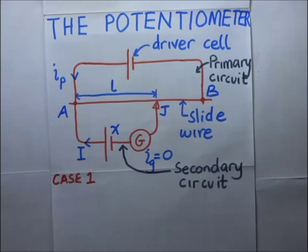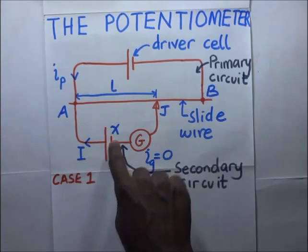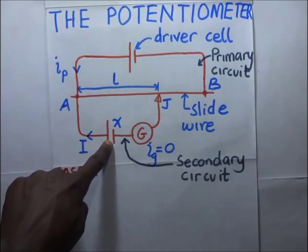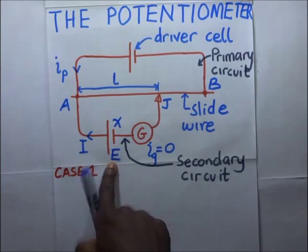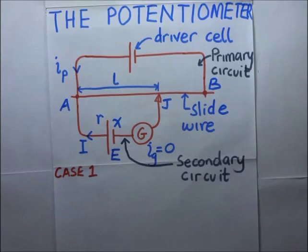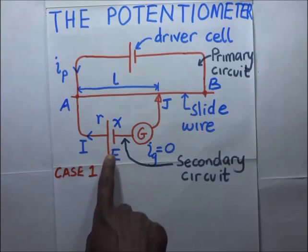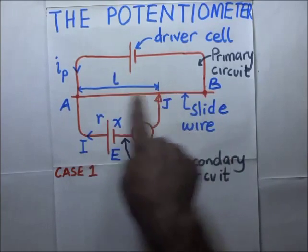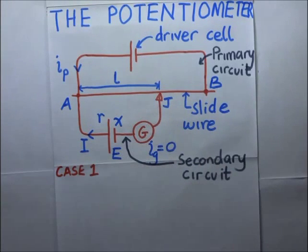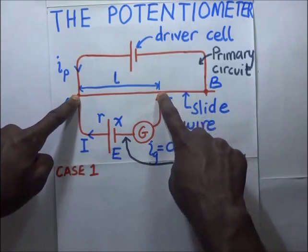We will look at two cases for finding the unknown PD. In case one, we explore how to find the unknown potential difference of cell X. If we want to find the EMF E of a cell in the secondary circuit — which has EMF E and internal resistance r — we first slide the jockey along the wire to obtain the point where no current flows through the galvanometer. That is the balance point of the potentiometer.